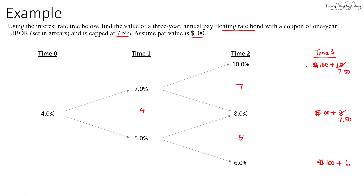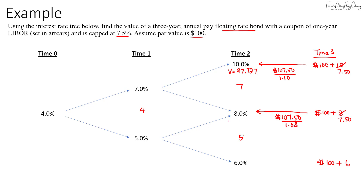We then discount the cash flows back to the previous period. $107.50 discounted at 10% gives $97.727, and $107.50 discounted at 8% gives $99.537. For the $106 cash flow discounted at 6%, the value comes back to $100 since the coupon rate matches the discount rate.